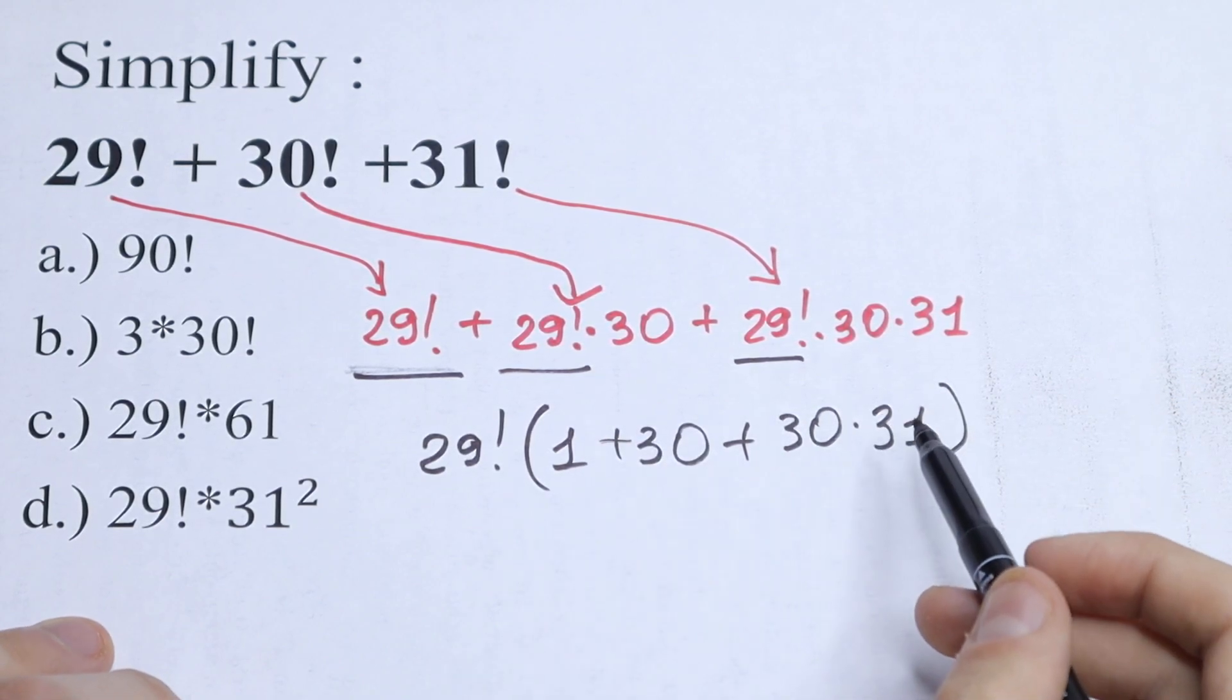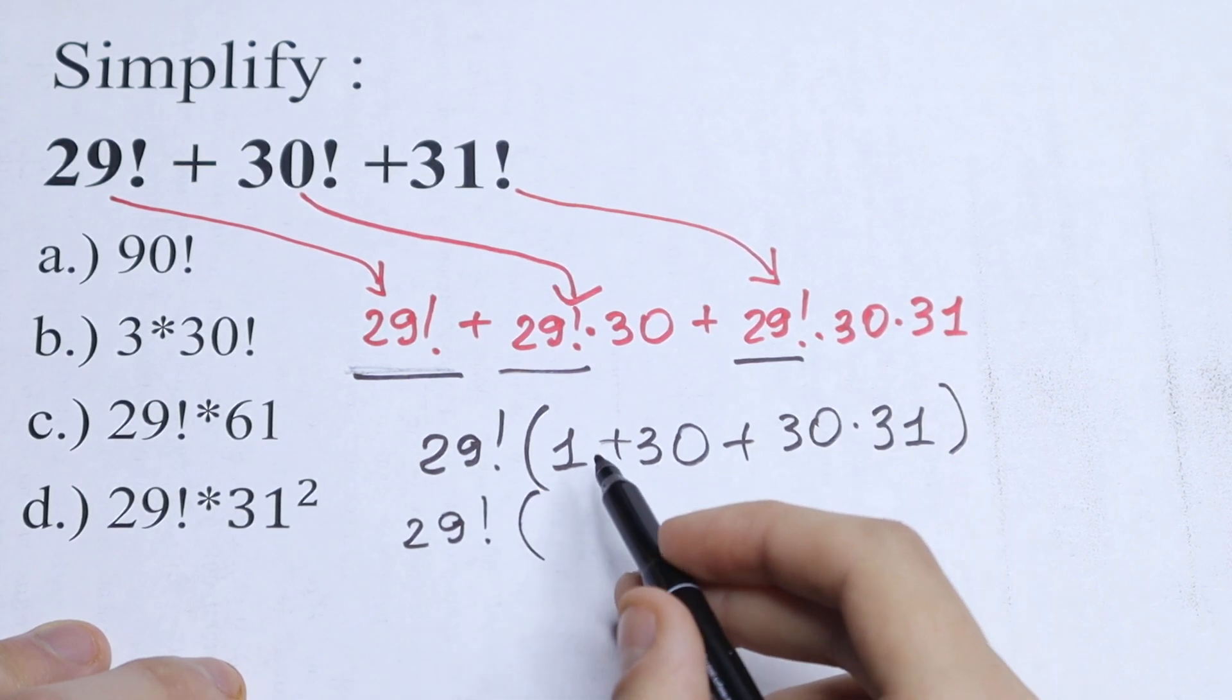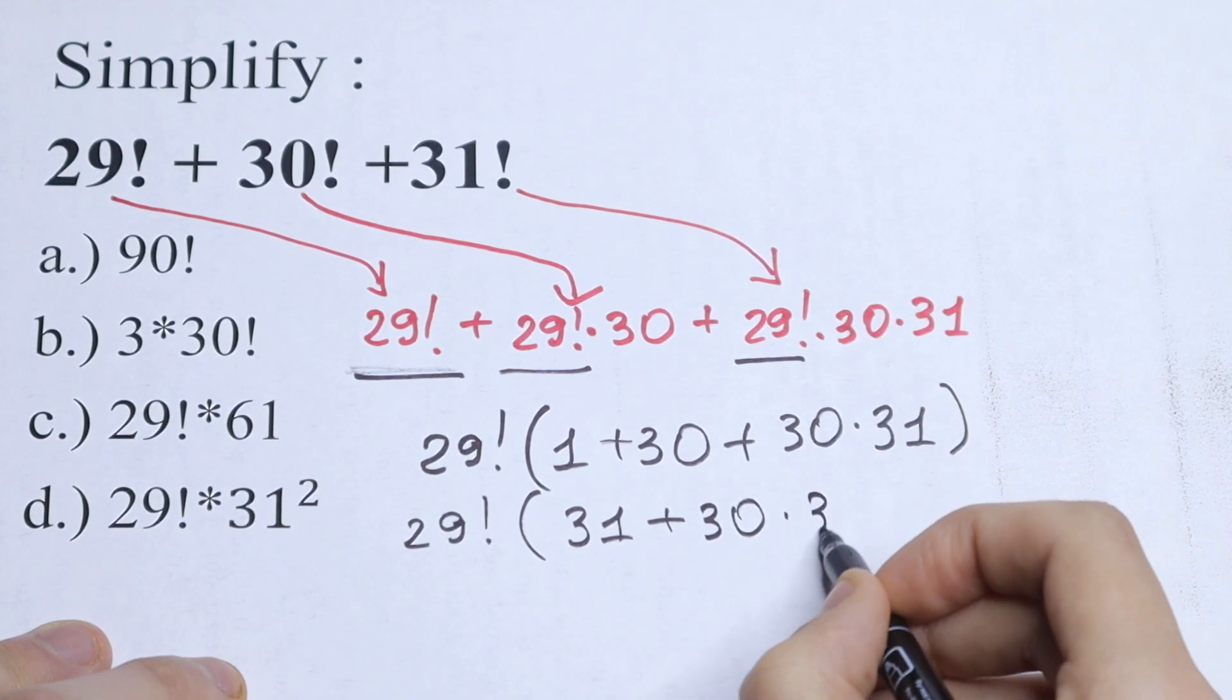So let's simplify this in our parentheses. We will have 29 factorial, and in parentheses we will have 31 plus this product, plus 30 times 31.